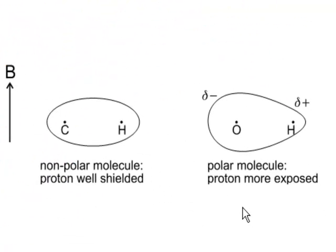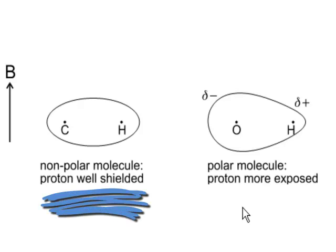I'm comparing a CH bond with an OH bond. In the CH case, our proton has got a good amount of electron density surrounding it. That's going to be a well-shielded proton.